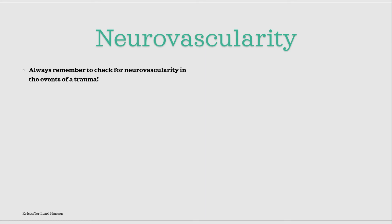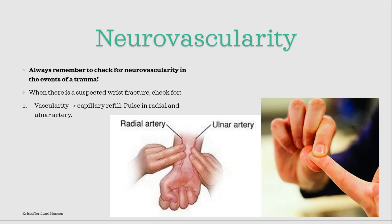Always remember to check for neurovascularity when there has been a trauma — this is the most important thing that you should do. When there has been a trauma to the wrist and a fracture is suspected, first check vascularity. This is easily done by pressing the tip of all the fingers for a few seconds, then releasing and watching whether it goes back from white to red. The color should return to normal within about 2-3 seconds.